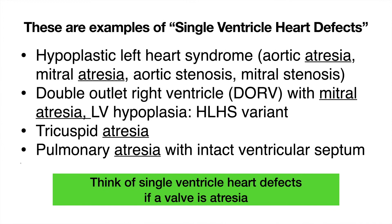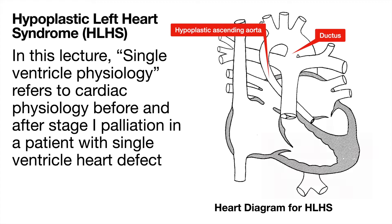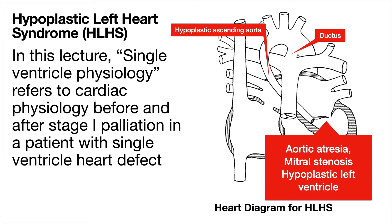Examples of single ventricle heart defects include hypoplastic left heart syndrome, aortic atresia, mitral atresia, aortic stenosis, mitral stenosis, double outlet right ventricle with mitral atresia with LV hypoplasia as an HLHS variant, tricuspid atresia, and pulmonary atresia with intact ventricular septum. Think of single ventricle heart defects if a valve is atretic. This diagram shows HLHS, and in this lecture, single ventricle physiology refers to cardiac physiology before and after Stage 1 palliation.